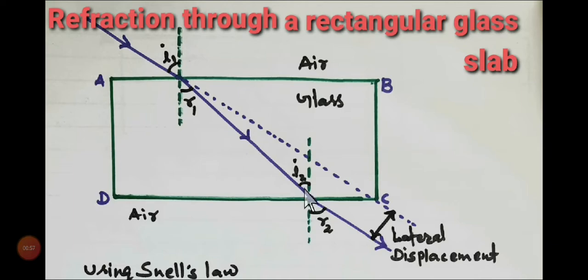After bending it will move straight, which is the nature of light. And at this surface again there is a change in medium. Inside there is glass, outside again there is air. Medium change.